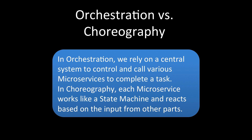Whereas in choreography, each microservice works like a state machine and reacts based on the input from other parts. In choreography in real life, you have multiple dancers, and based on the input or output from one dancer to another, they know what the next step they have to take is. One event happens and then the other starts doing the second event — there is nobody one person controlling everybody. In technical terms, it's like a state machine where the state keeps on changing.